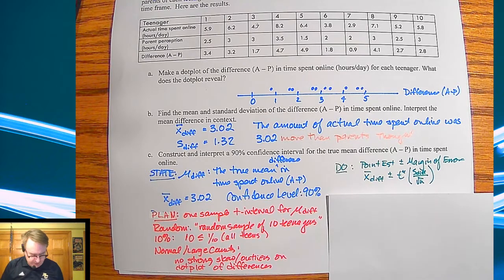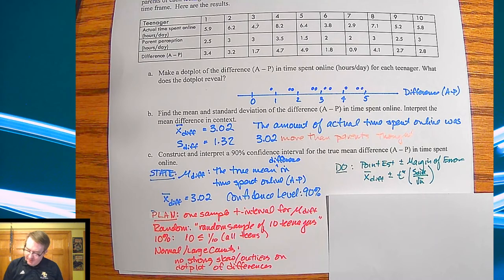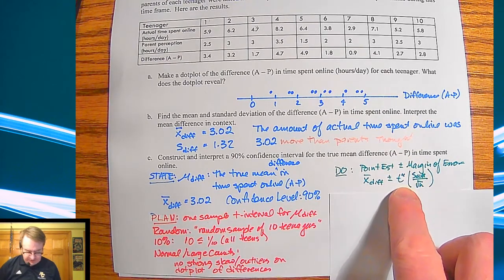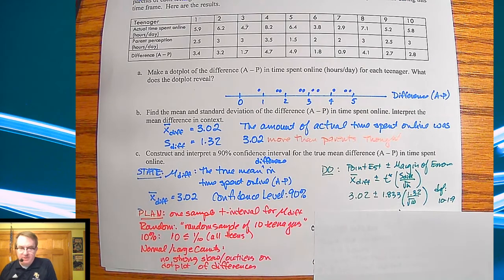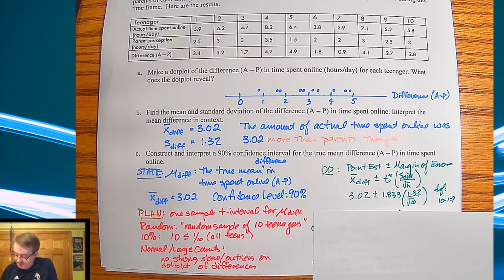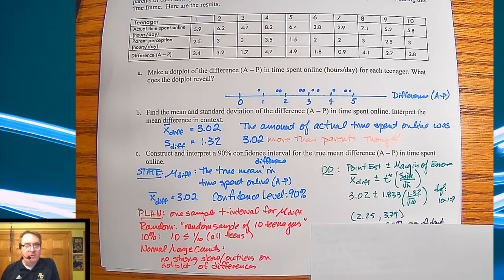For the point estimate and margin of error, we use X-bar difference plus or minus the margin of error — general form first, then specific. Degrees of freedom is 9 because we have 10 observations, so 10 minus 1 equals 9. Plugging in the numbers gives us an interval between 2.25 and 3.79.